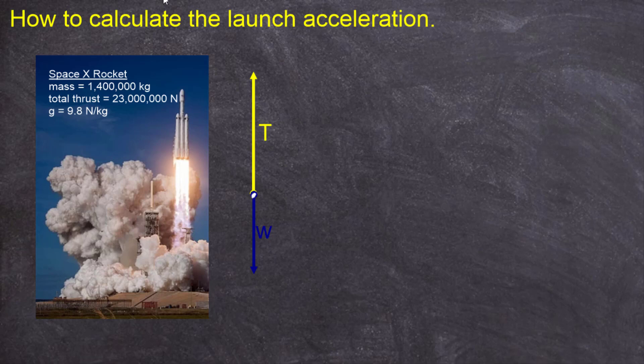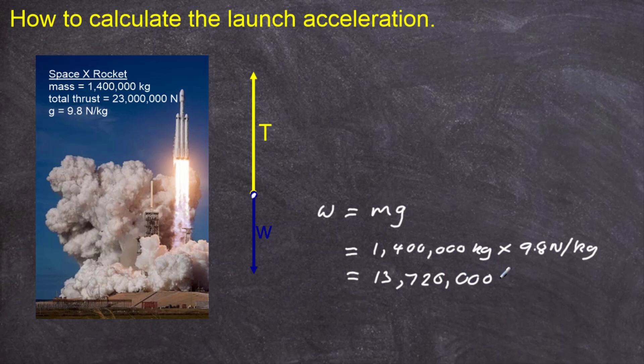To calculate the weight of the rocket, well that's quite straightforward. The weight of the rocket is equal to the mass of the rocket times the gravitational field strength. And we know the mass of the rocket is going to be 1,400,000 kilograms. Multiply it by 9.8 newtons per kilogram at the surface. And if we do that calculation on the calculator, we end up with a figure of 13,720,000 newtons.